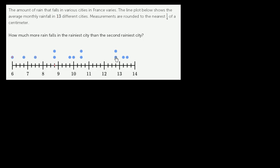There were two cities that had an average monthly rainfall of 12 and 3/4 centimeters. So at any given amount of rainfall, it's essentially showing you how many cities had that amount of rainfall on average per month.